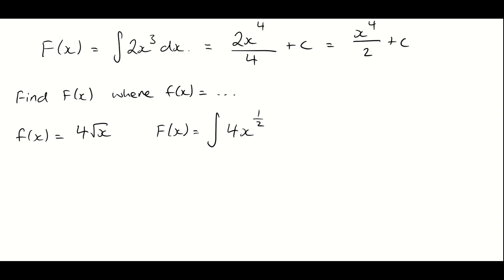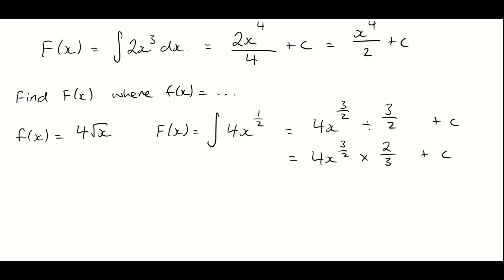We follow the exact same process — add 1 to the power, so we get 4X to the power of 3 halves, and divide by the new power of 3 over 2, then plus C. Dividing by a fraction is the same as multiplying by its inverse, so we multiply by 2 thirds, giving us 4X to the power of 3 halves times 2 thirds plus C. That works out to 8X to the power of 3 over 2, divided by 3, plus C.